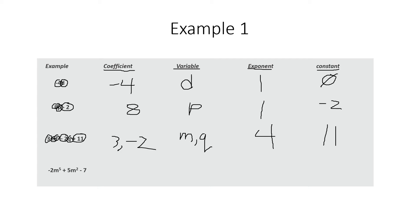Final example: negative 2m to the power of 5 plus 5m to the power of 2 minus 7. The variable is m — there are two m's, but we just put one m. The coefficients are negative 2 and 5. The exponents are 5 and 2 — we do not add them, just write them down. The constant is negative 7.